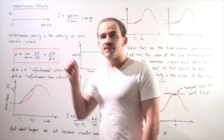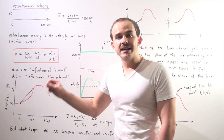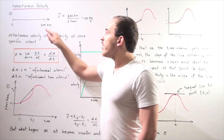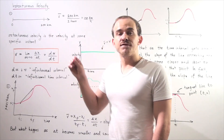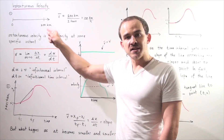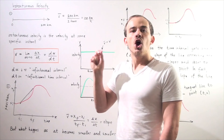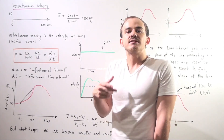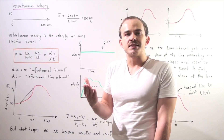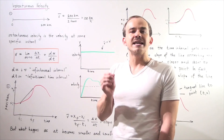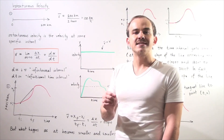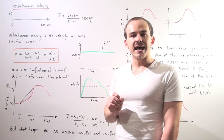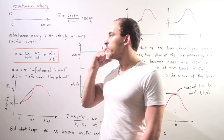Instantaneous velocity is the velocity at some specific point. So if I want to find what my velocity at that specific point is, I have to find what my instantaneous velocity is. Sometimes instantaneous velocity is the same thing as average velocity, but that's not always the case, as we'll see in just a moment.